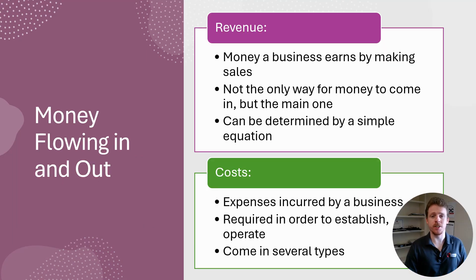How does money enter and exit a business? A major way that money flows in is through revenue, which is simply money a business earns by making sales. While a business can make money through other means, such as owner investment or a loan, revenue is the reliable form of income that makes or breaks a business. It can be determined by a simple equation, which we'll discuss shortly.